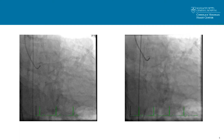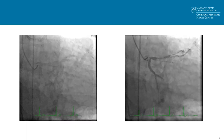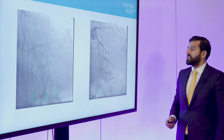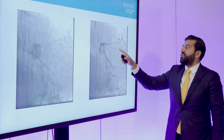Here are his diagnostic films of the left system. You can start to appreciate some left main disease with deep calcium. He has LAD disease, and you can also see calcium in the circumflex with mild disease distally. These are orthogonal projections of the left system. In the LAD you can see fairly significant disease, and when the contrast doesn't fill, you can see a significant degree of calcification.